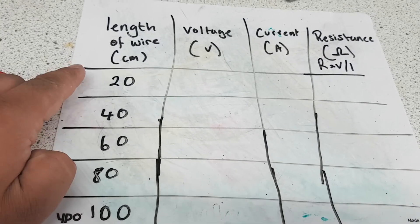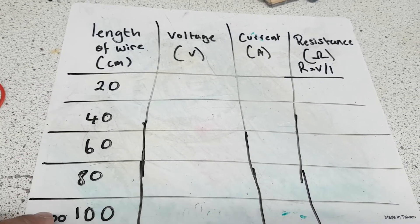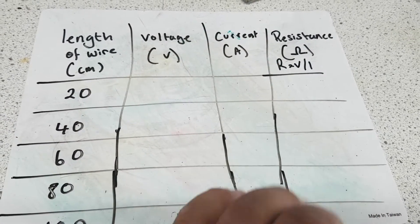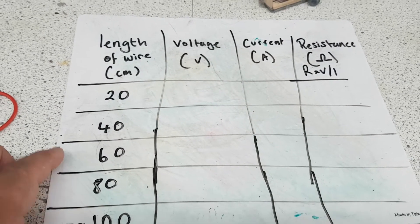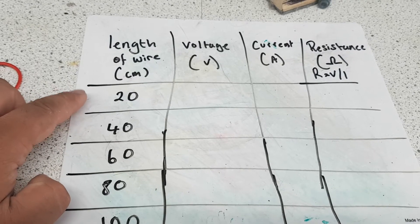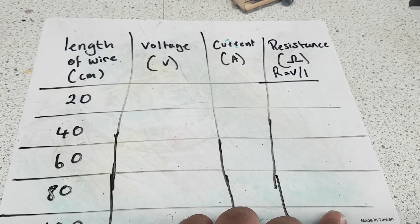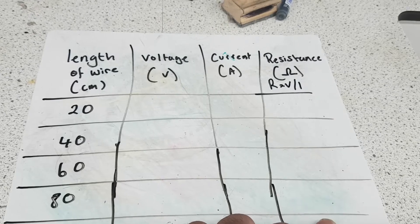And then you're going to find out the relationship. So as the length increases, what happens to the resistance? And then what you could do after that is plot a graph of the length of the wire against the resistance of the wire.